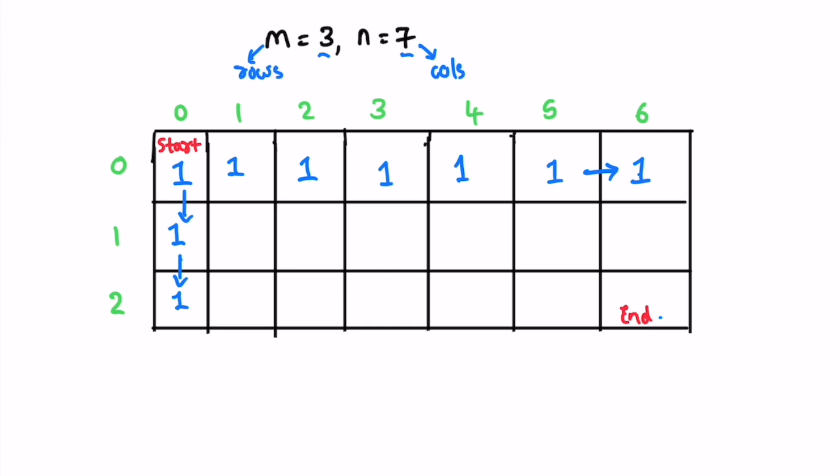The elements in the first row and the first column will be our foundation to build the DP array. You can see that the first row and the first column are filled with 1s — that is how you start building the DP array. Now we start our iteration from cell (1,1), and all cells from here will be built from their previous row and previous column values.